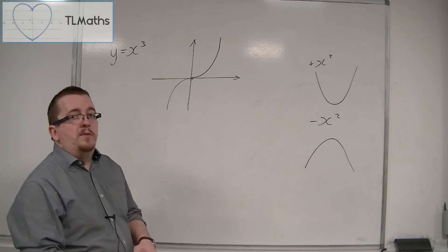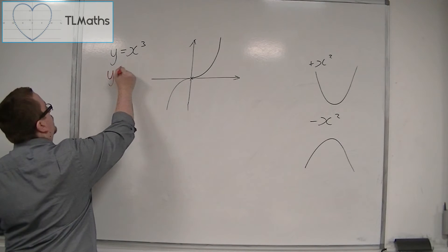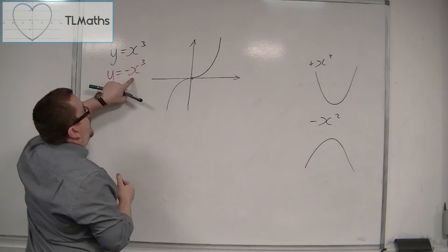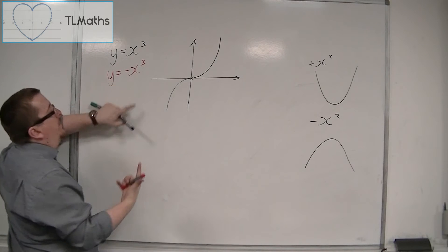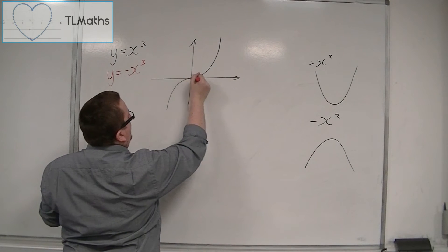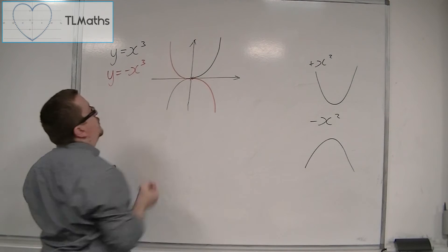If you then look at y equals minus x cubed, then you're looking at minus 1 cubed, minus 2 cubed, minus 3 cubed. And so the curve will look like this, and from the other direction, like that.